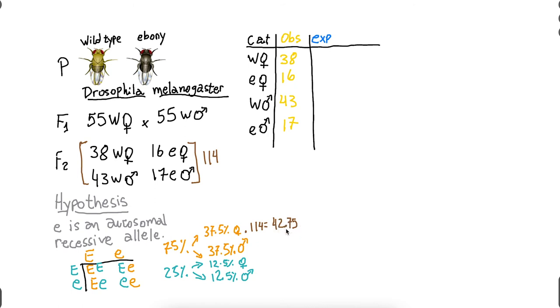And you can ask, well, should I round this number? How is it possible to have 42.75? No one can be 0.75 fly, and you would be right. There is no such thing as 0.75 fly, but this is not the actual number of flies we have. This is the expected number, and the expected number should not be rounded up. Otherwise, this is going to throw off our statistics.